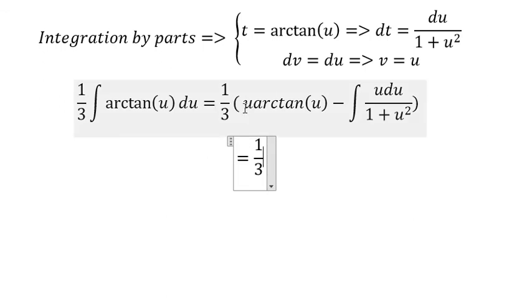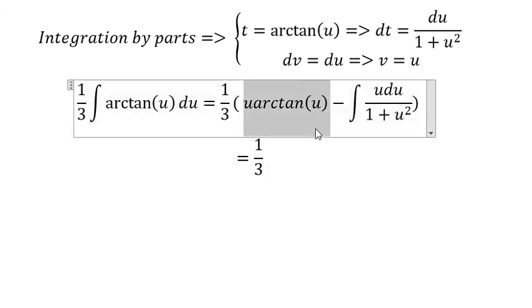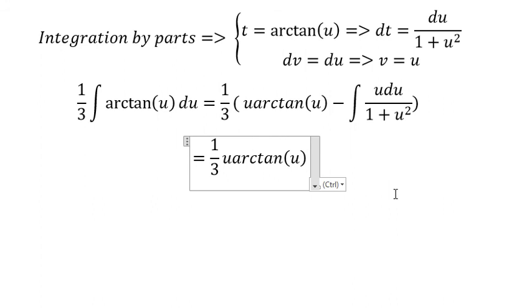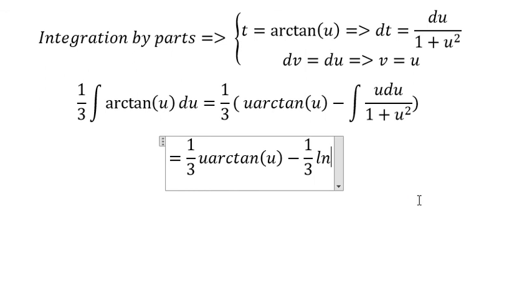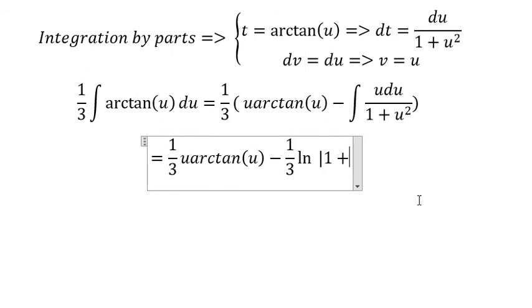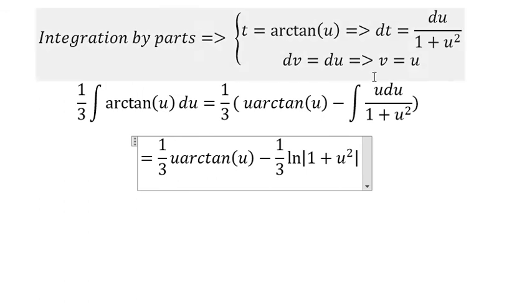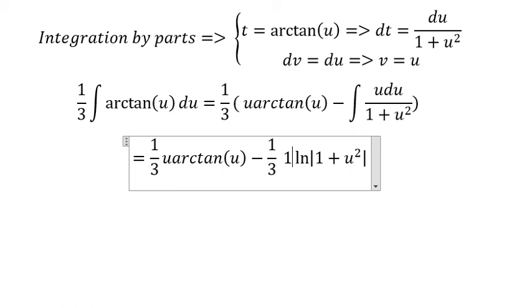1 over 3 multiply with this one minus 1 over 3. In this situation we use the logarithm base e of 1 plus u squared. Because we need 2u but we don't have the 2, so we have 1 over 2 here. 1 over 3 multiply with 1 over 2 gives 1 over 6.